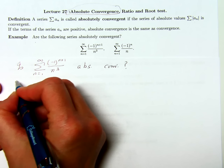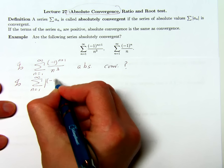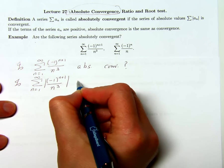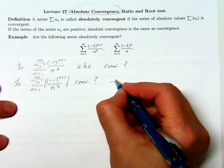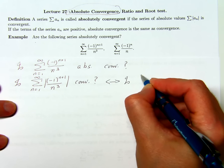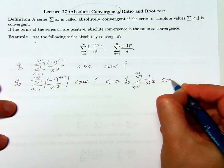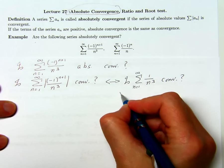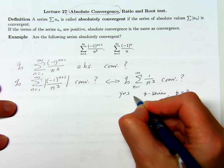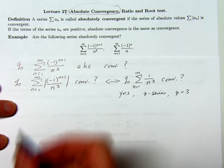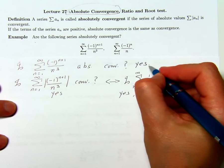So my question translates to: is the sum of 1 over n³, n running from 1 to infinity, a convergent series? The answer is yes, because it's a p-series with p equals 3. So the series is absolutely convergent.